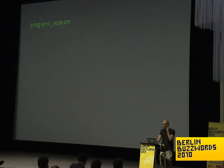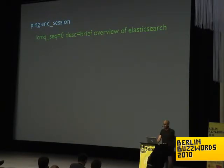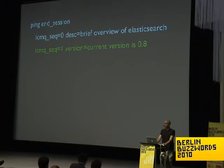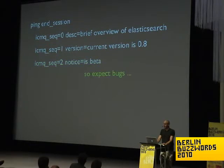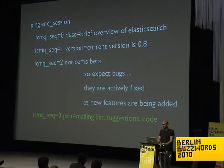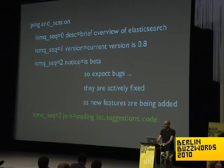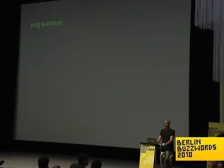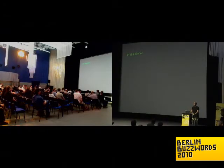That's the end of the session — a brief overview of Elasticsearch. The current version is 0.8, it is in beta, so expect bugs, but they are actively being fixed as new features are being added. Please join the mailing list, send suggestions, code contributions, everything. Welcome anything. Thank you. Any questions?